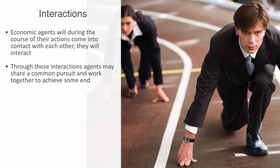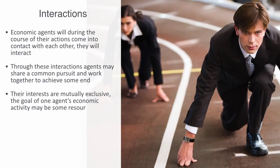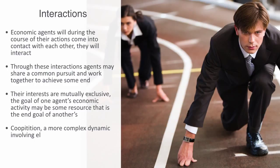Inversely, these agents may find that their interests are in fact mutually exclusive. The end goal of one agent's economic activity may be some finite resource that is the end goal of another's, and both of these agents want as much of this resource as they can possibly attain, given its finite nature. In such a case, we may well get a second type of fundamental social interaction, what is called competition. Also, we may get some form of both, what is called coopetition, a more complex dynamic involving elements of cooperation and competition. All of these different dynamics are studied within the area of game theory, that we will be discussing in later modules.